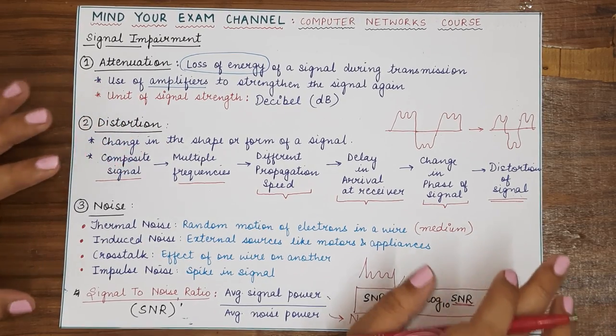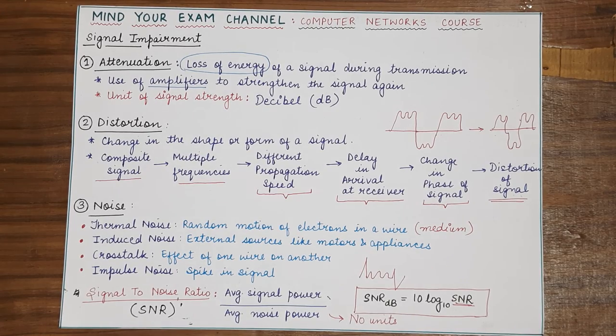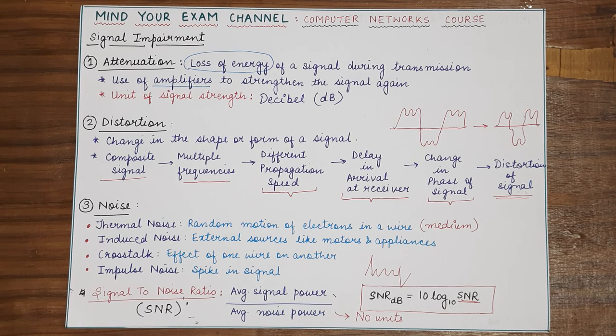So, this was all for today's lecture. I hope you have understood the three kinds of signal impairment that can be caused during transmission. So, thank you for watching. If you like this video, please mention to us in the comment section below. So, till we meet in the next video, mind your exam.